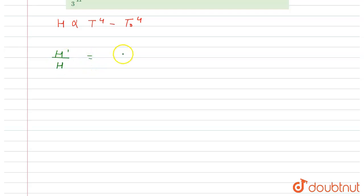equals 900 raised to power 4 minus 300 raised to power 4